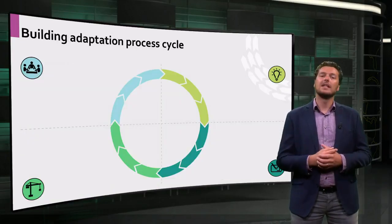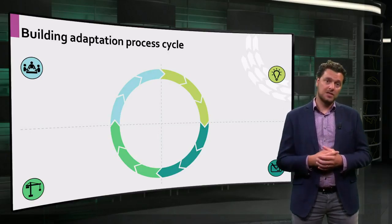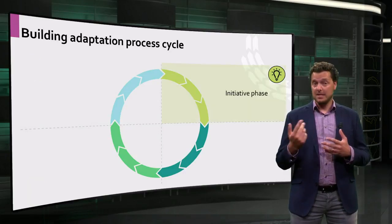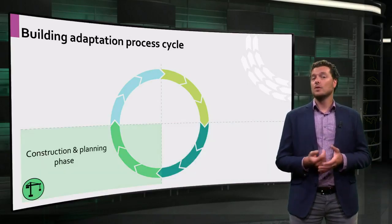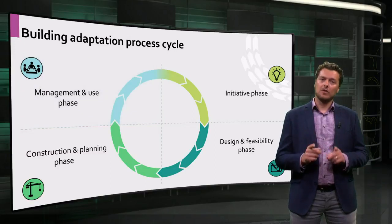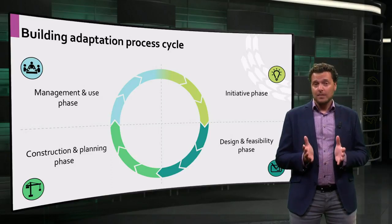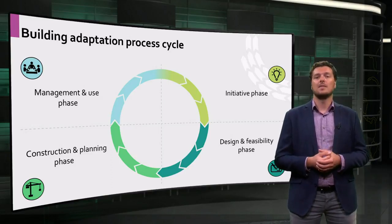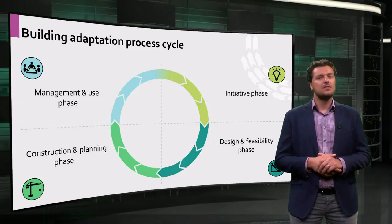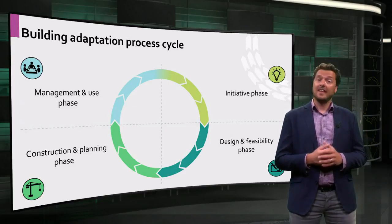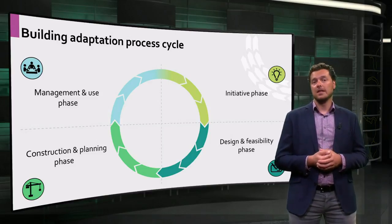Let's talk about this building adaptation process cycle, which functions as a guideline in this course. The cycle consists of four consecutive phases: the initiative phase, the design and feasibility phase, the construction phase, and the management and use phase. The development of a new building starts with an initiative and ends in a management phase. Note that existing buildings that need to be adapted are always in a management and use phase. But to start the building adaptation process, someone still needs to take the initiative to adapt it. Then a redesign has to be made, the building needs to be reconstructed, and finally the building can be reused again.